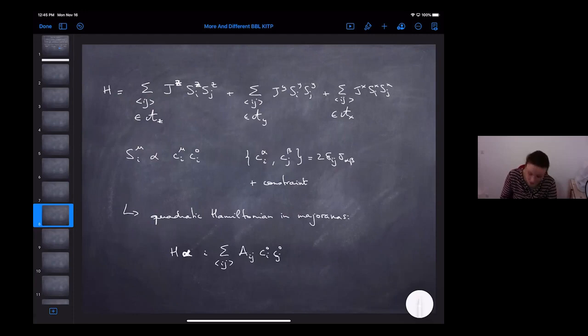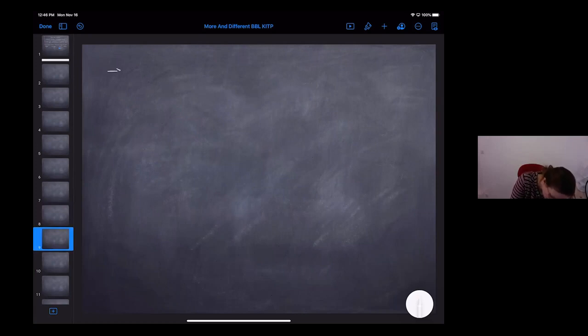So basically you get a Hamiltonian which is just H, it's proportional, I need to figure out the factors of two, but it's basically just some hopping terms which are A_ij C_i C_j. So it's just a quadratic Hamiltonian and it turns out that for G_X more or less equal to G_Y more or less equal to G_Z, you actually get gapless Majorana modes which propagate in the system.